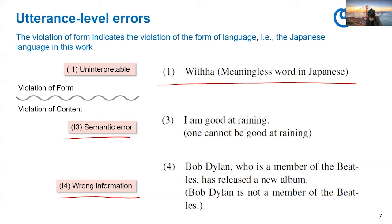As for I4, wrong information, the example would look like: 'Bob Dylan, who is a member of the Beatles, has released a new album.' This is wrong because Bob Dylan is not a member of the Beatles, so this is a violation of content.